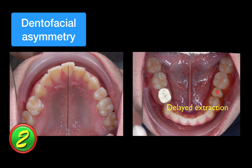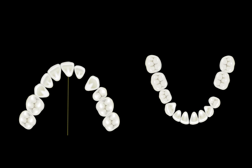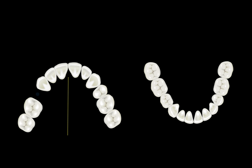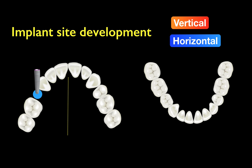Then we talk about how to correct dental facial asymmetry. We use asymmetrical mechanics. The upper left primary lateral incisor is going to be removed, and the size of the lower right primary second molar will be reduced to 7.5 millimeters for a future implant. In the upper arch, opening the right space and closing the left space will make the midline change. Closing the lower left space will correct the lower arch. The space between the upper right canine and the upper right first molar was created for implant site development. Implant site development has two types — vertical and horizontal — and we use the horizontal implant site development in this case.